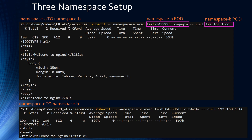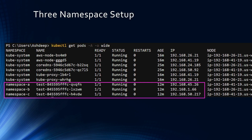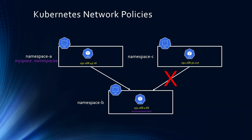Similarly, we can ping the pod running in namespace B from namespace C, and that also works. Mapping this to our diagram: we have three namespaces A, B, and C with their actual pod IP addresses. The label for namespace A is myspace:namespace-a, and the label for the pod running in namespace B is environment:test. The objective of the Kubernetes network policy will be: namespace B pod should allow traffic from namespace A, but traffic from namespace C should not be allowed.